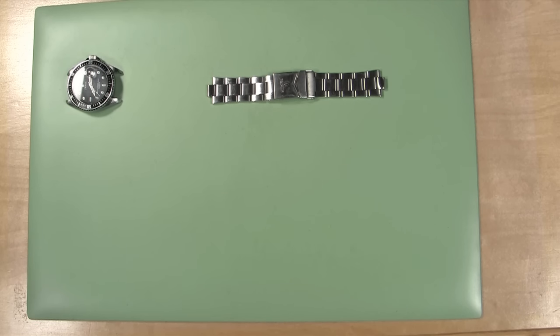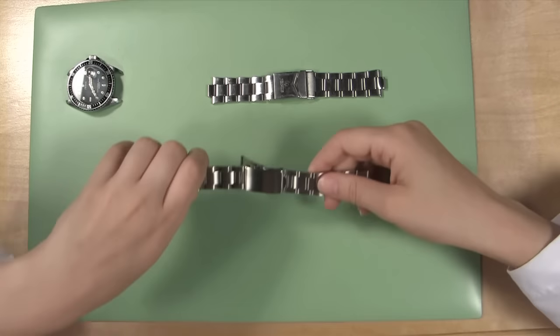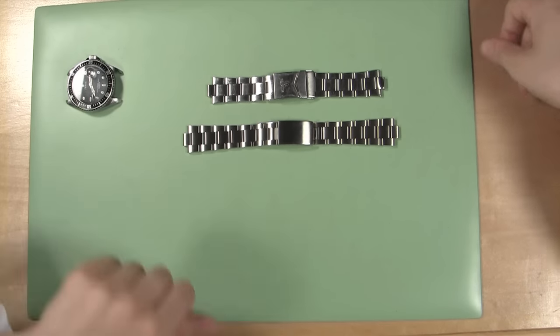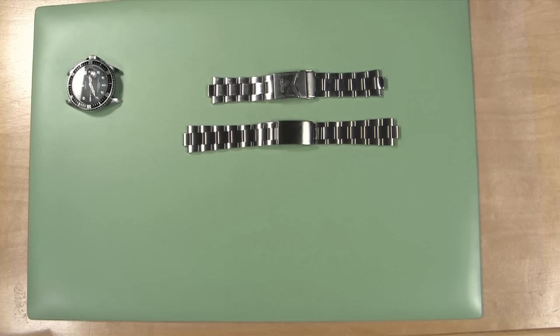Take your new watch band and lay it out beside your old watch band. Match up the bands so they face the same way, so you can determine which side of the watch case the new band should go on.